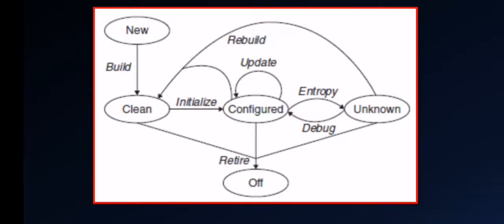Next is entropy, which refers to the gradual process of change that results in a computer that has an unknown state. The causes are numerous and may include undisciplined changes made by the machine, major changes in the environment, or unexplained problems. Next we have debug, which refers to the process of debugging an unknown machine and getting it back to specifications. This is usually an intensive hands-on experience, and debugging can often involve updating as well. In computer lingo, when you say debug, it means you are correcting errors.